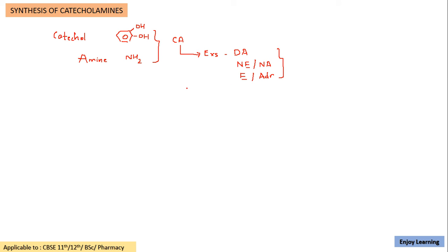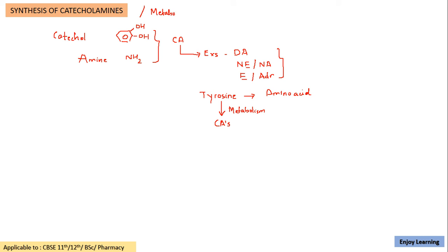The synthesis of catecholamines is going to take place using tyrosine. Tyrosine is the starting material — it is an amino acid. This amino acid is going to undergo breakdown to form the catecholamines: dopamine, norepinephrine, and epinephrine. The breakdown of tyrosine into catecholamines can also be called metabolism of tyrosine. So we can also call the synthesis of catecholamines the metabolism of tyrosine.